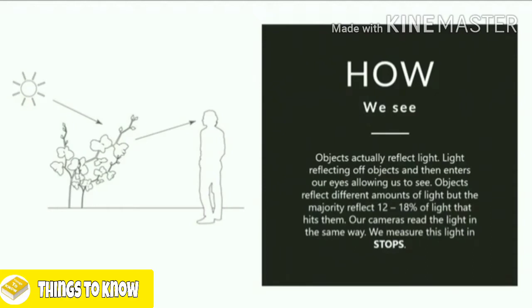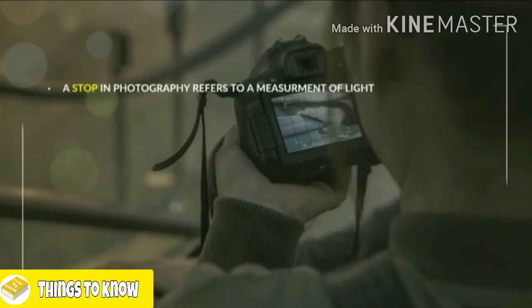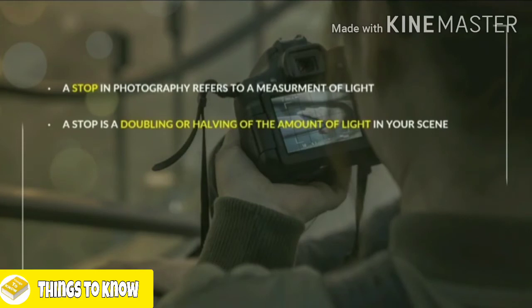This light being measured and bounced off objects that comes into our camera is measured in what we call stops of light. So what are stops of light? A stop in photography refers to a measurement of light. A stop is either doubling or halving the amount of light in your scene.